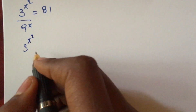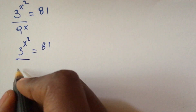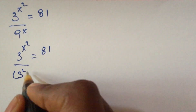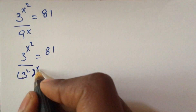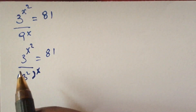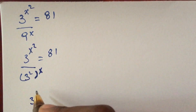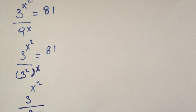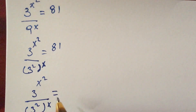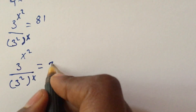We rewrite 9 as 3 squared, so the equation becomes: 3 to the power of x squared over 3 squared to the power of x equals 3 to the power of 4, since 81 equals 3 to the power of 4.